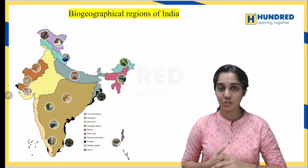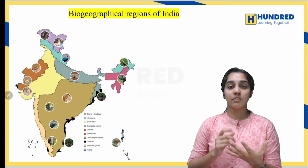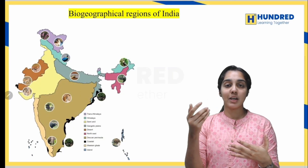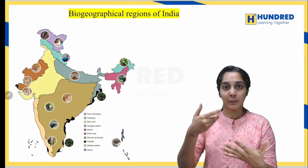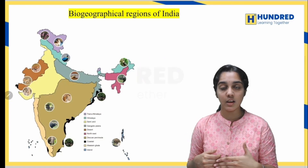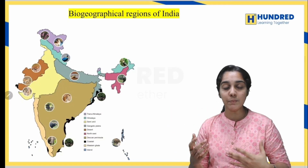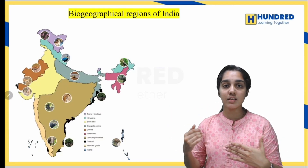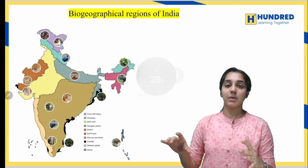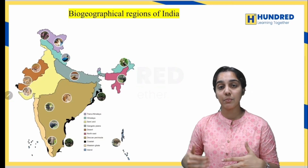From biogeographical regions, we can expect questions like: which among the following is a biogeographical zone — you should pick the right one from the options. Another form is assertion-reason type questions. Also, on which factors the biogeographical zones are classified — that type of question can be expected.